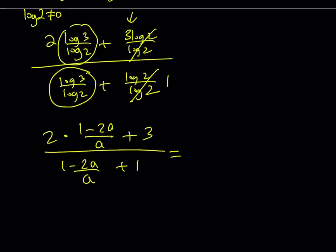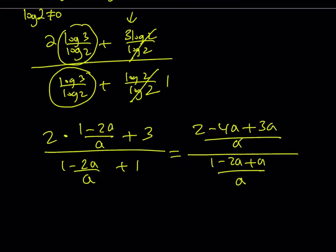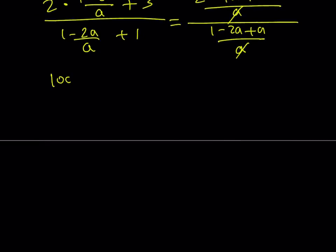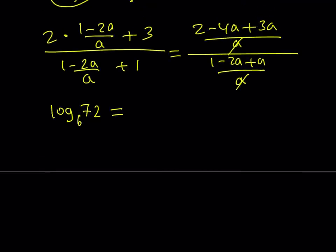Multiply and make a common denominator. That's going to be 2 minus 4a, and then plus 3a, because I need to make a common denominator. And then, that's going to be a. The bottom is going to be 1 minus 2a, plus a, over a. The a cancels out when you flip and multiply. The top is going to give you 2 minus a. Let's remember the original expression. I was trying to find log base 6 of 72, and that can be written as 2 minus a, divided by 1 minus a.